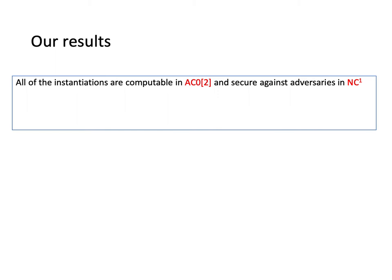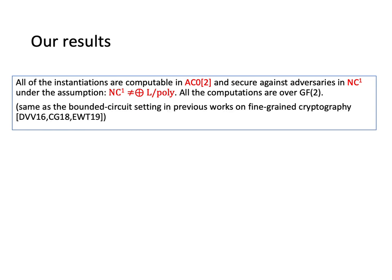Our instantiations are computable in AC0² and secure against adversaries in NC¹. The assumption is that NC¹ is not equal to parity L/poly. This assumption is widely believed to hold. Also, we know that all the computations are over GF(2). This setting is exactly the same as the bounded circuit setting in previous works on fine-grained cryptography.